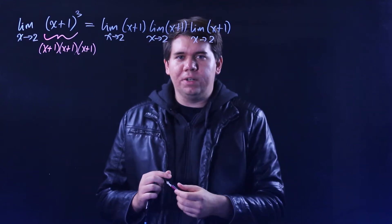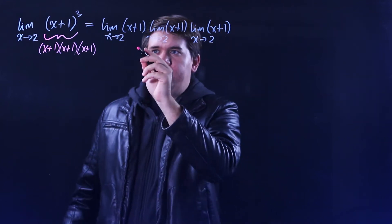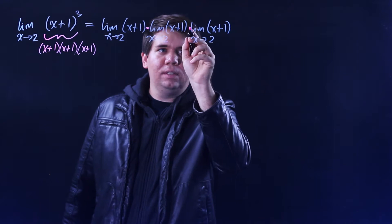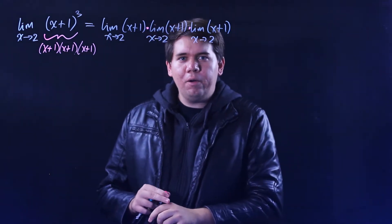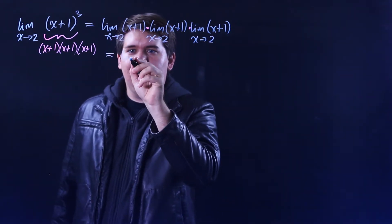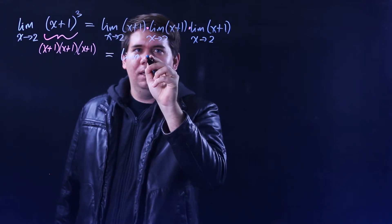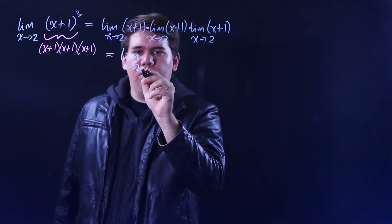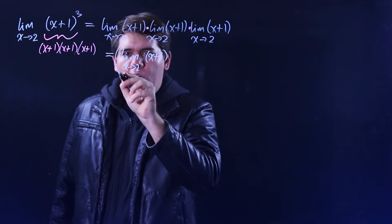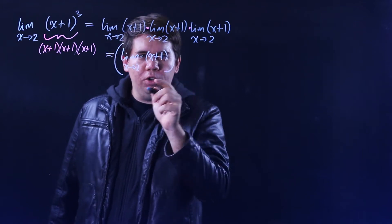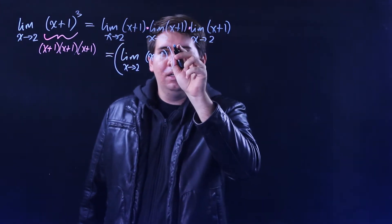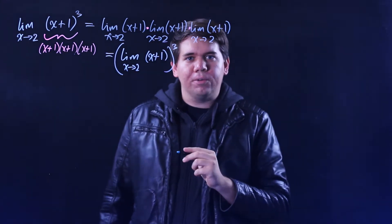But notice what you have here. You have this limit times itself times itself. That would just be the same thing as the limit as x approaches 2 of (x+1), whatever the limit comes out to be, raised to the third power.